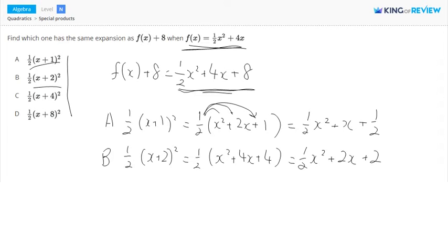What about option C? It says 1 half x plus 4 squared. So that's going to be 1 half times x squared plus 1 half x squared plus 4x plus 8.